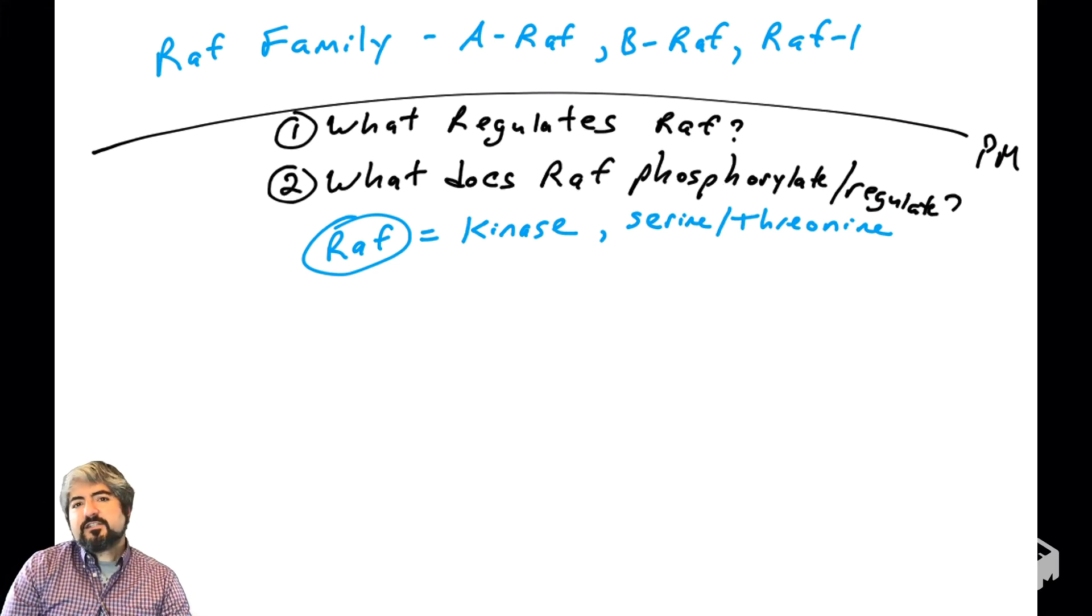The questions that we have to answer are: what regulates RAF? Because most enzymes have their activity regulated. They're not on all the time. Some are off, some are on. And what does RAF phosphorylate? And therefore, what does RAF regulate? These are the two questions we're going to answer.